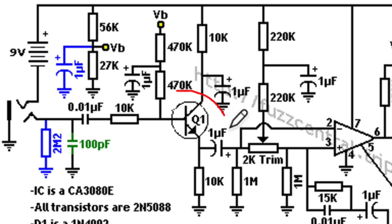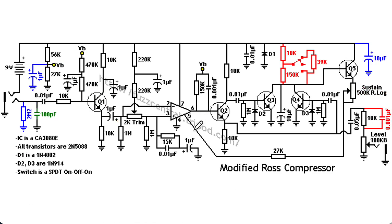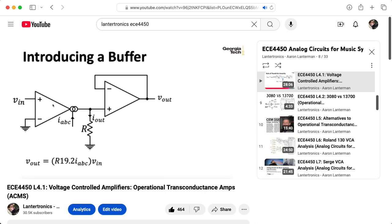The first thing we hit is this common collector amplifier, also known as an emitter follower. So this is acting as a voltage buffer. We then get to the heart of the circuit, which is a CA-3080 operational transconductance amplifier. OTAs are not operational amplifiers. They're a unique beast. I discuss OTAs extensively in my EC4450 analog circuits for music synthesis class, and you can find lectures relating to those things here on YouTube.